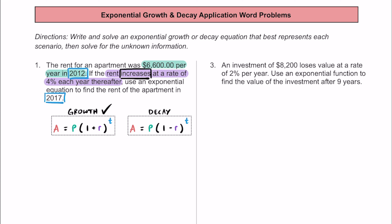A real quick refresher: A represents whatever the amount is going to be at the end. P represents whatever the initial amount is starting with. R represents the rate of change, so that could be increasing or decreasing — because we have an addition sign, that means we have growth. And T in the exponent represents the amount of time in years.